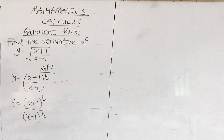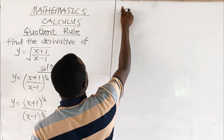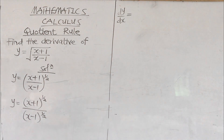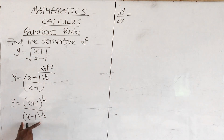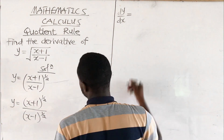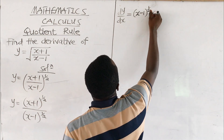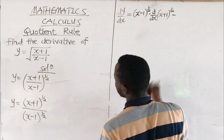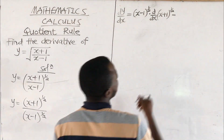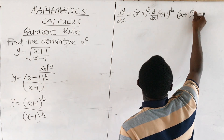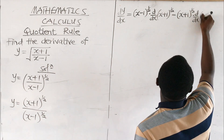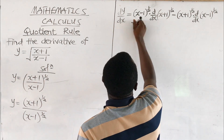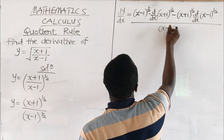Now since we have this, we can start the differentiation. So dy over dx equals — any time we differentiate using the quotient rule, we keep the denominator and differentiate the numerator. So we keep (x minus 1) to the power half, then differentiate the numerator (x plus 1) to the power half, minus keep the numerator (x plus 1) to the power half then differentiate the denominator (x minus 1) to the power half.